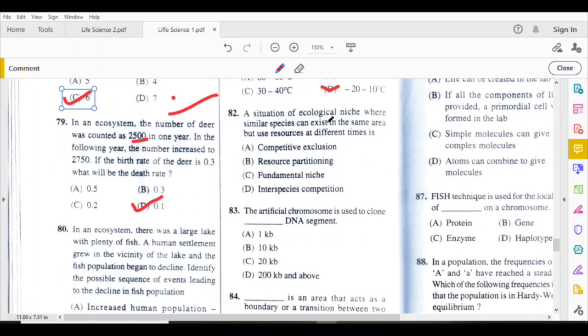A situation of ecological nature where similar species can exist in the same area but use resources at different times. Here, resource partitioning is correct.